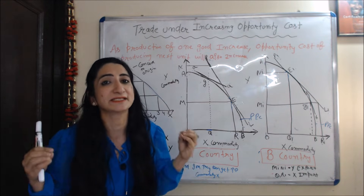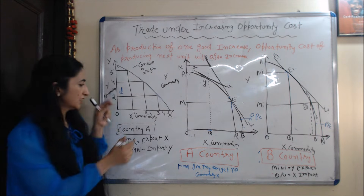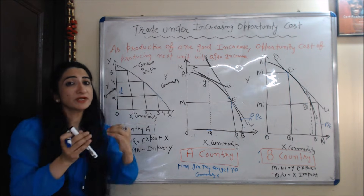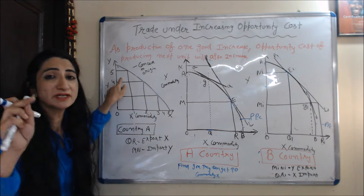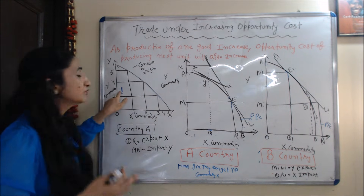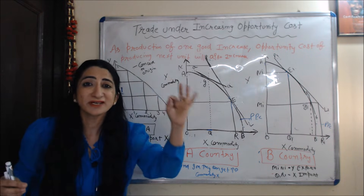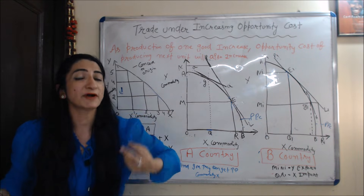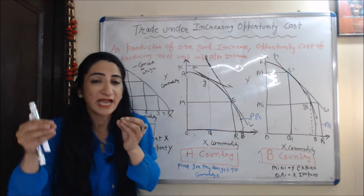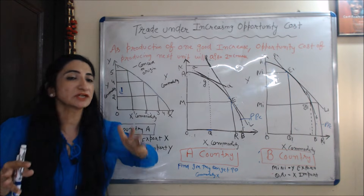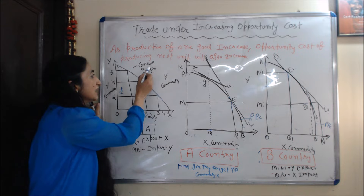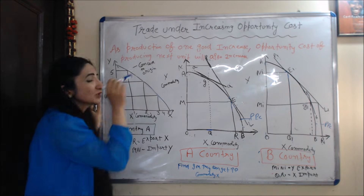We understand this with the help of an example. In this diagram, we have two commodities: X commodity on the x-axis and Y commodity on the y-axis. Initially, when the producer increases one more unit of X, he has to sacrifice only one unit of Y. But when the producer again increases one more unit of X, he has to sacrifice two units of Y. As production of X is increasing, the opportunity cost of X is also increasing. In case of increasing opportunity cost, we have a production possibility curve that is concave to origin.